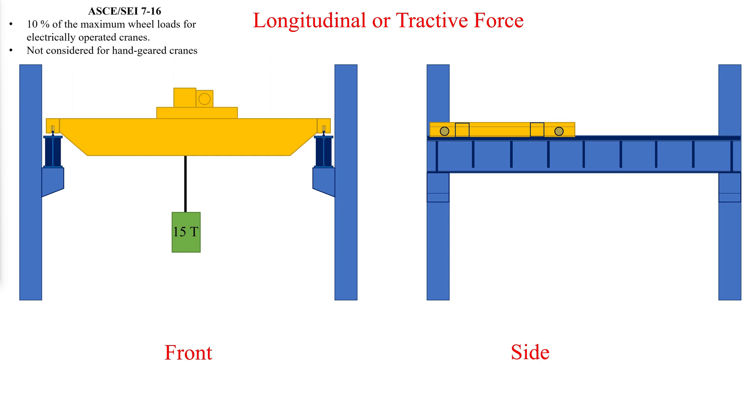According to ASCE 7-16, the longitudinal force on crane runway beams is calculated as 10% of the maximum wheel loads of the crane. ASCE 7-16 excludes bridge cranes with hand-geared bridges from this requirement. Thus, tractive forces are not required for hand-geared cranes. The longitudinal force shall be assumed to act horizontally at the traction surface of a runway beam in either direction parallel to the beam. An LRFD factor of 1.6 is recommended.